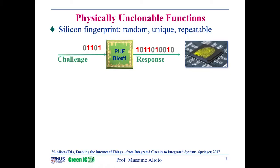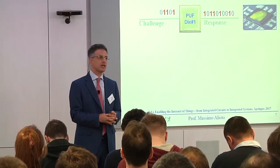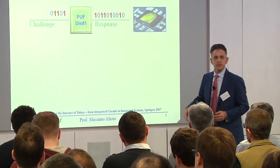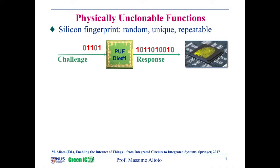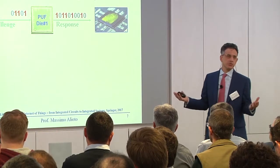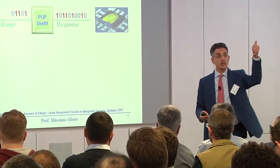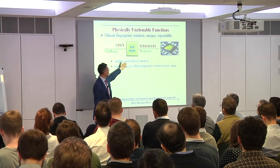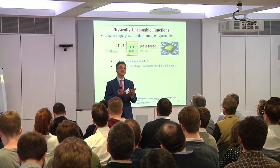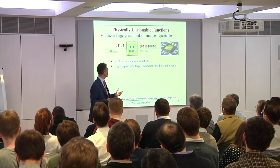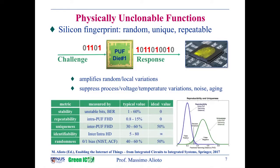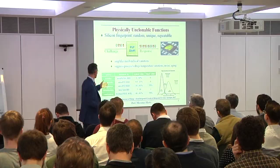The Physical Unclonable Function is essentially a circuit — kind of a digital circuit, though not exactly. The response is digital. You apply a challenge and you get a response which is pretty much like a fingerprint, because it tends to be random and unpredictable, as well as unique and repeatable. In practice, these are circuits with narrow behavior able to amplify random local variations — the intrinsic differences between transistors from the same silicon die — and suppress dependence on any common factor. This quality translates into well-known metrics that evaluate the quality of the PUF.